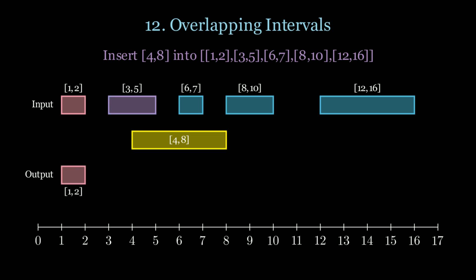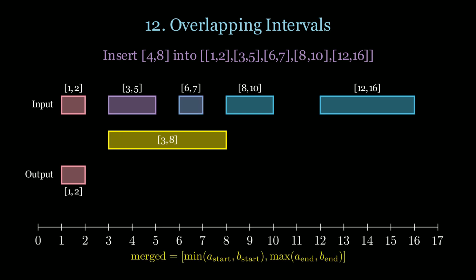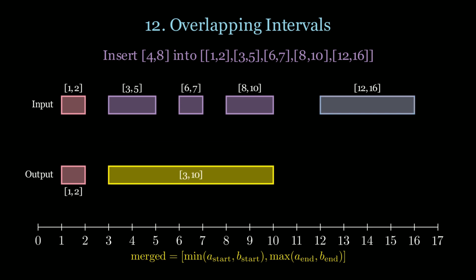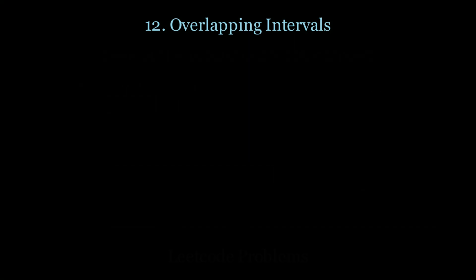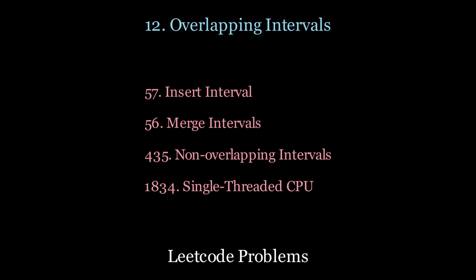6 and 7 is contained so nothing changes, and 8 and 10 forces us to expand once again. We notice that 12 and 16 does not intersect with the interval, and so we're left with the final output. To get more practice, look at the following LeetCode questions.